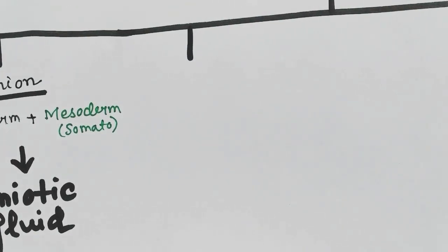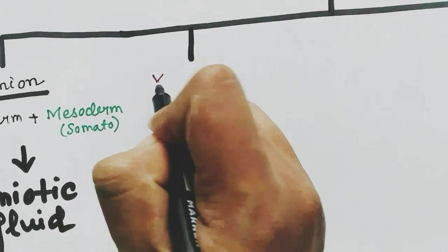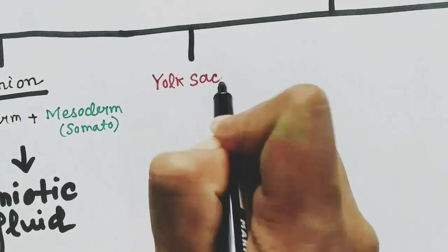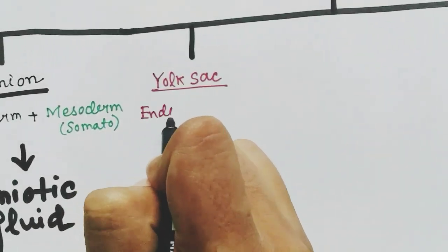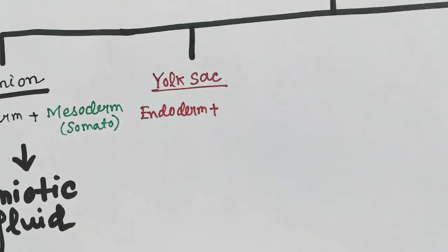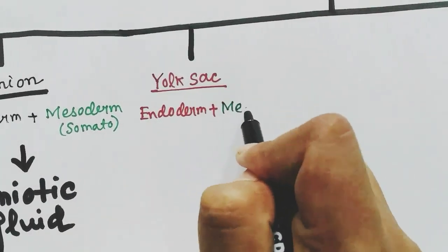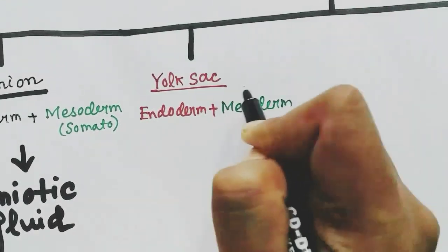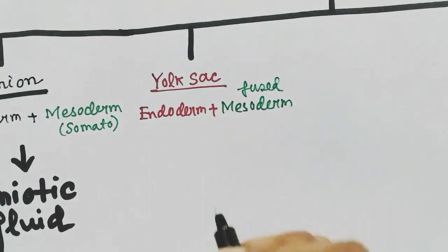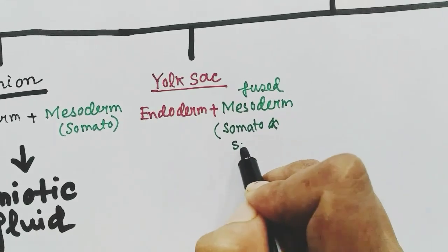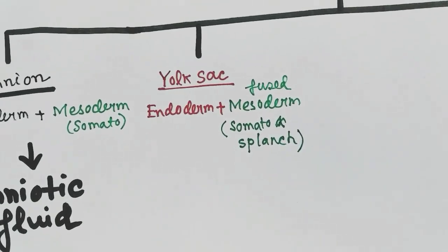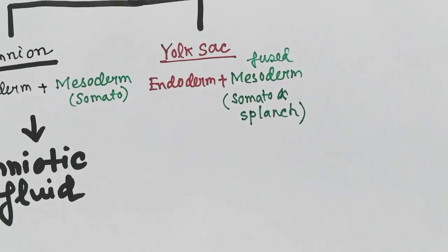Next, the yolk sac: it has an endodermic layer and a fused somatopleuric and splanchnopleuric mesodermic layer. It stores nutrition for the embryo.